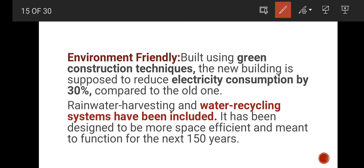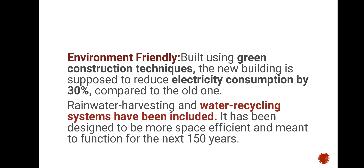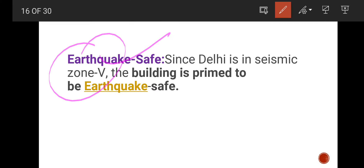The new building has been designed with a lot of space and is built to last the next 150 years. Most importantly, it is earthquake-safe, since Delhi falls in seismic zone 5, and the building has been specifically engineered to withstand earthquakes.